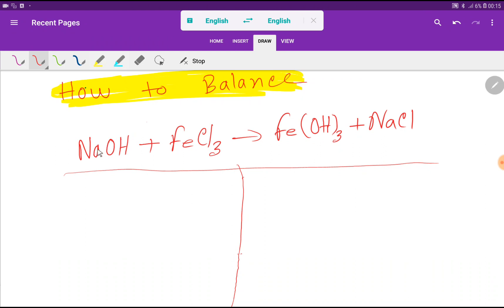This is sodium hydroxide. This is iron 3 chloride or ferric chloride. This is ferric hydroxide or iron 3 hydroxide and this is sodium chloride. To balance the reaction,